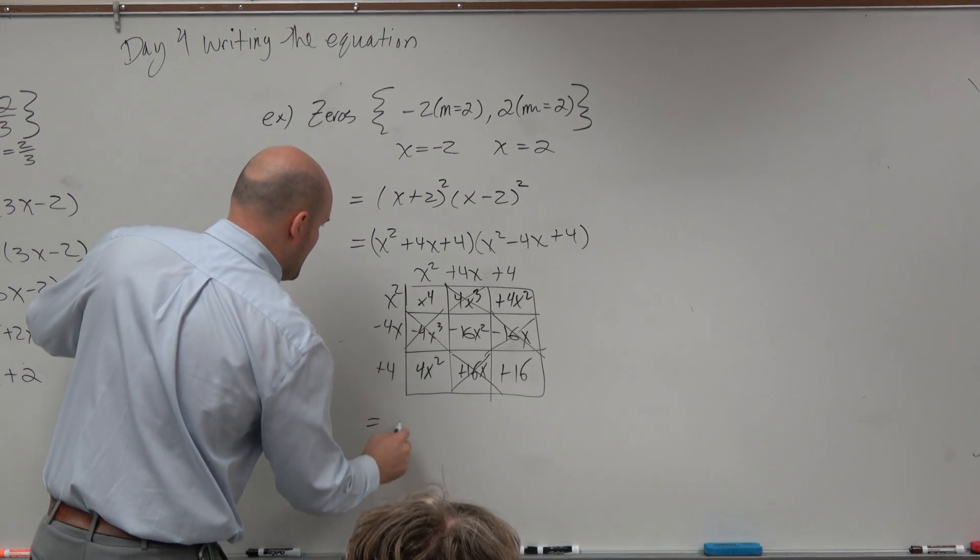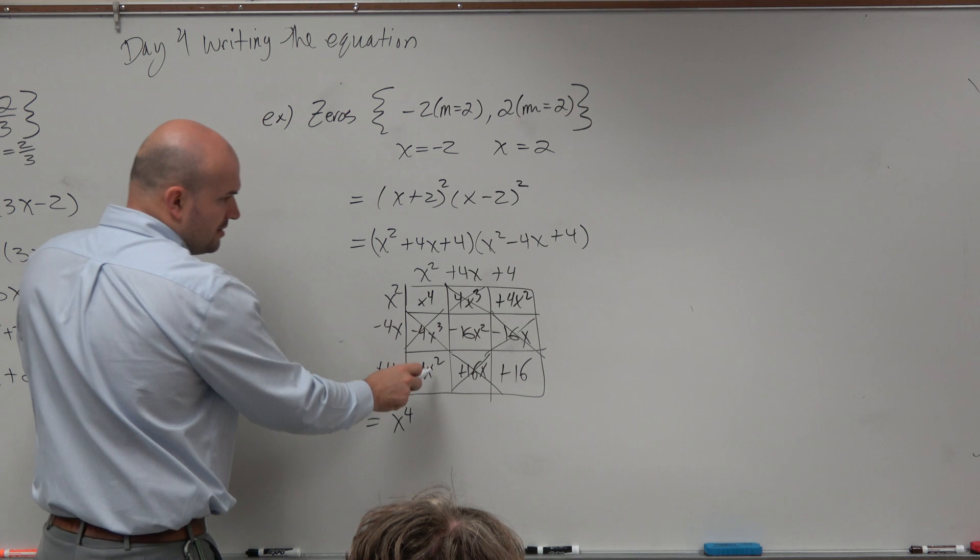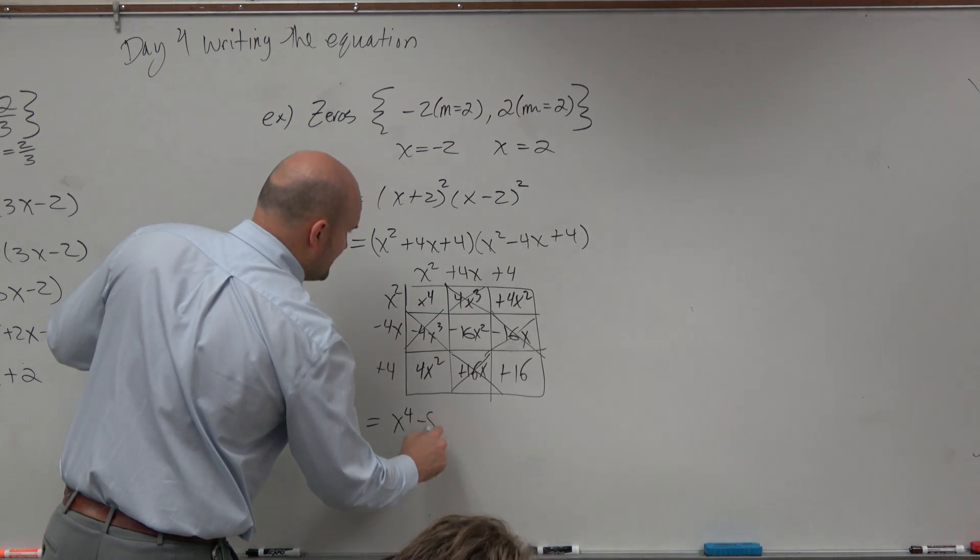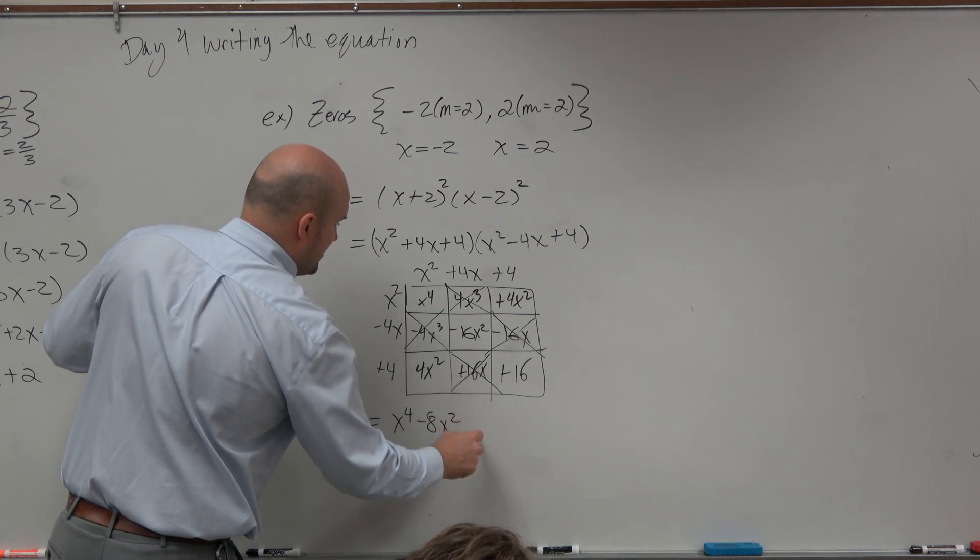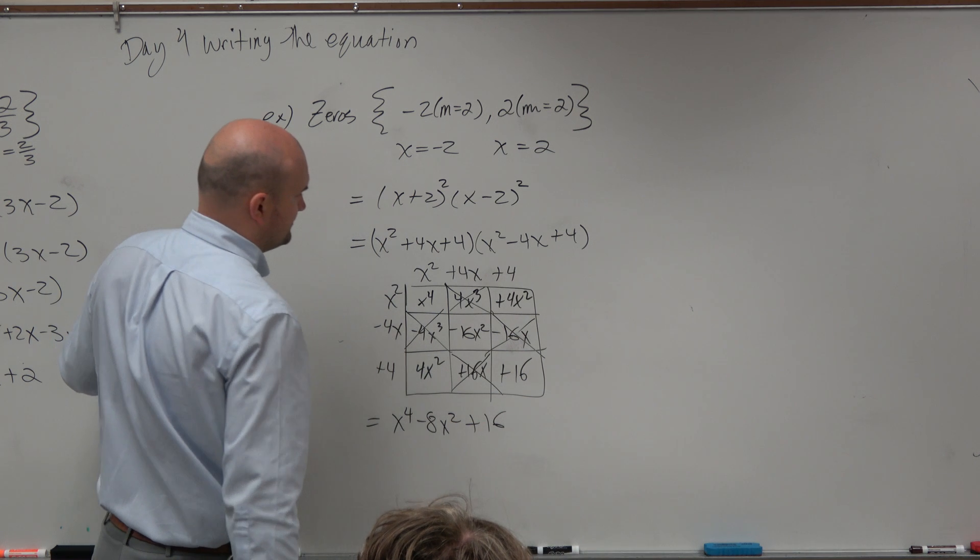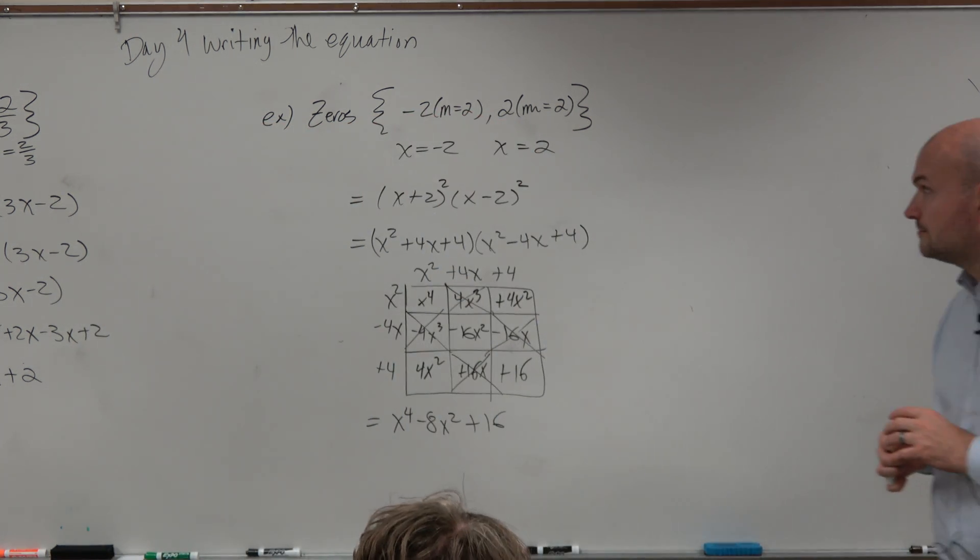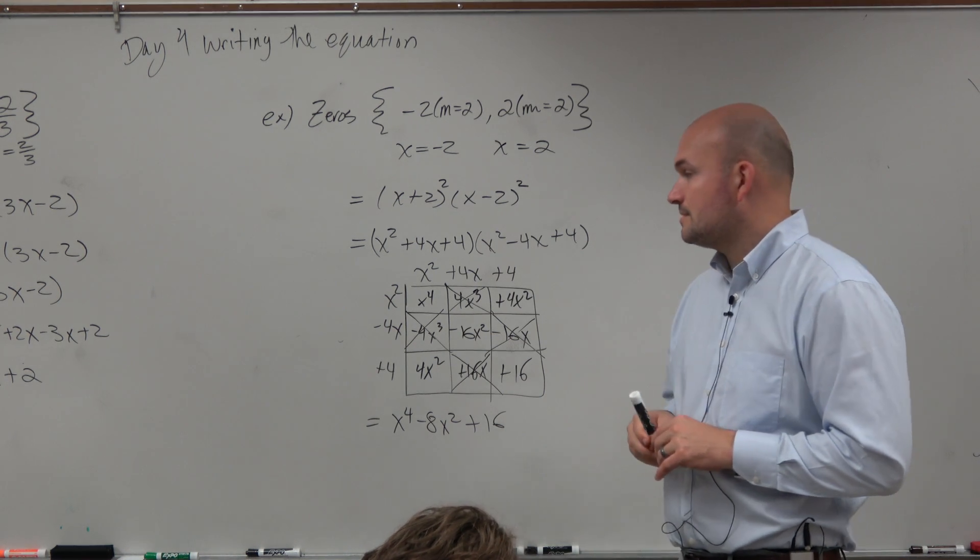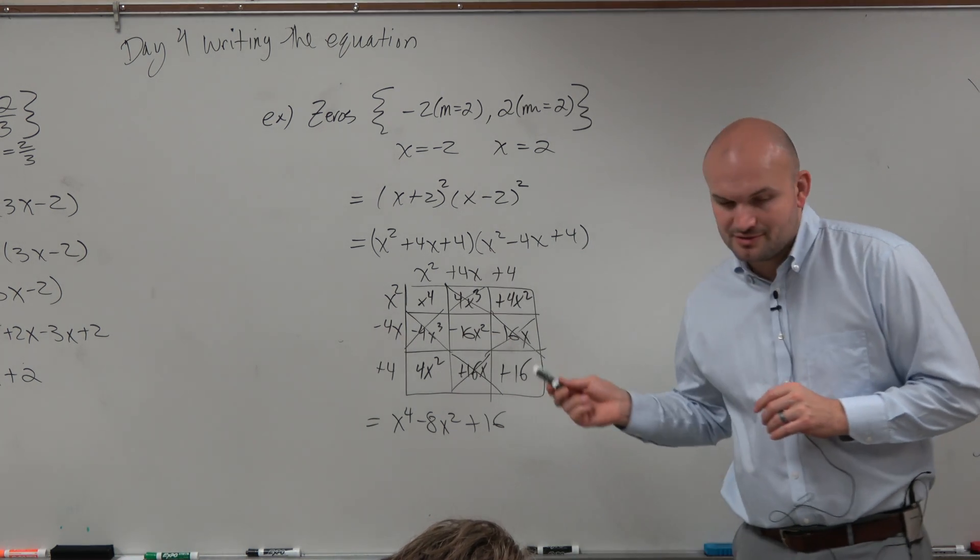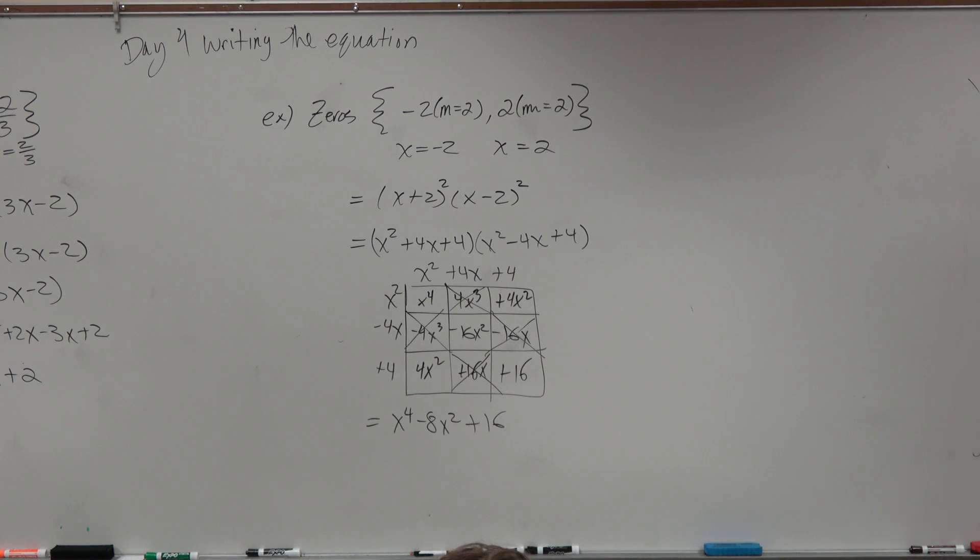So my final equation is x to the fourth. This becomes 8, so that's negative 8x² plus 16. Which brings us to a very good polynomial.